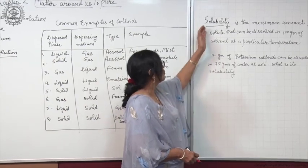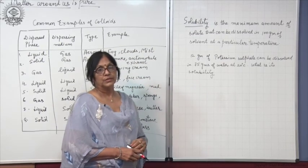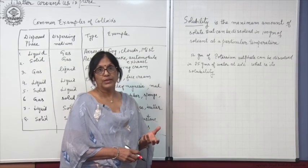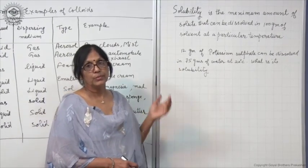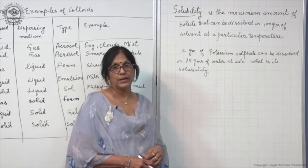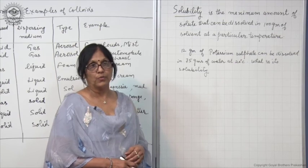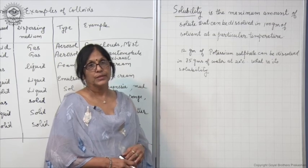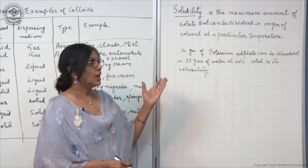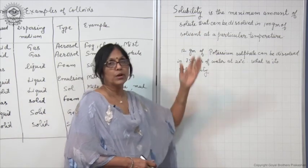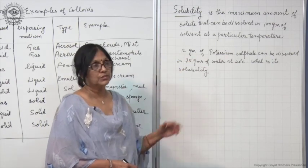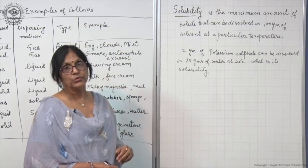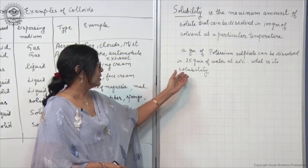You should also know about solubility. We learned how to make a saturated solution. Solubility is the maximum amount of solute that can be dissolved in 100 grams of water at a particular temperature. Temperature is very important to calculate solubility. For example: 12 grams of potassium sulphate can be dissolved in 75 grams of water at about 20 degrees centigrade — find out the solubility.